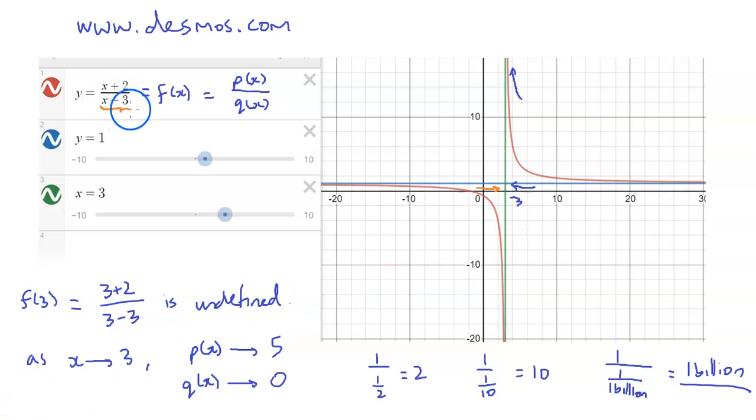Because, in fact, q(x) is less than 0 on this side. q(x) is less than 0, so we got the negative values. And so, as we can see, the function is heading towards negative infinity from below.